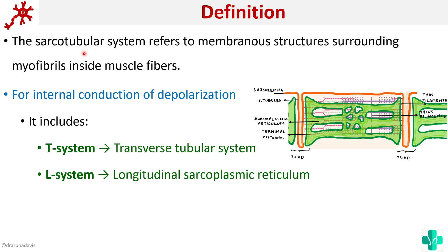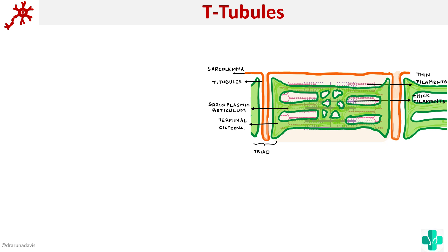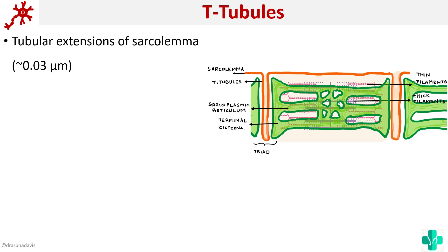The sarco tubular system includes the T-system or transverse tubular system, as well as the L-system. It is called L because it is longitudinal — at 90 degrees to the T-system. That is why it is called the L-system or longitudinal sarcoplasmic reticulum.